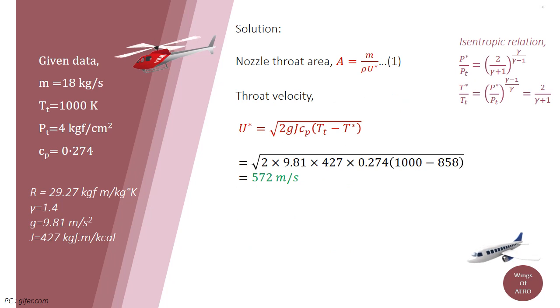Next, find the throat velocity. Throat velocity is directly proportional to the specific heat at constant pressure and the isentropic heat drop.